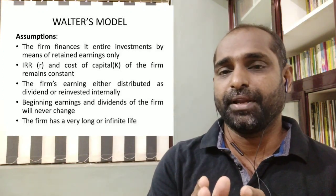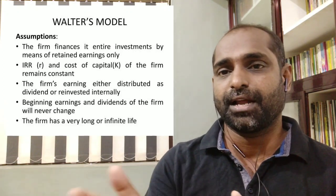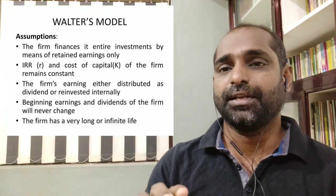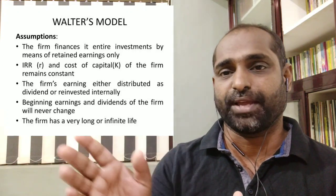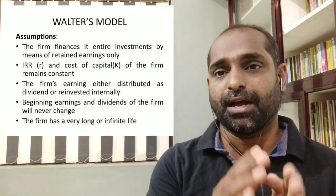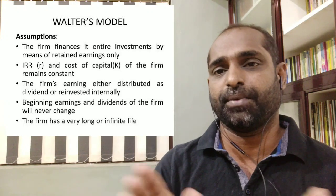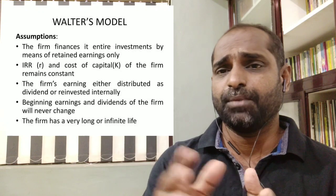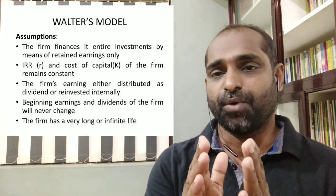One assumption is that the firm's rate of return, which is the internal rate of return (IRR), is constant. The expected rate of return is called KE, and the cost of capital is R. Both the rate of return and cost of capital are assumed to be constant under Walter's model.